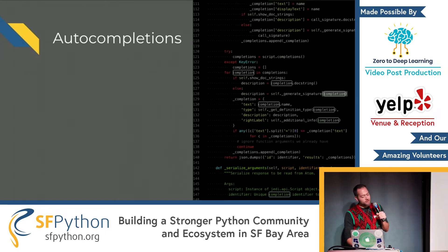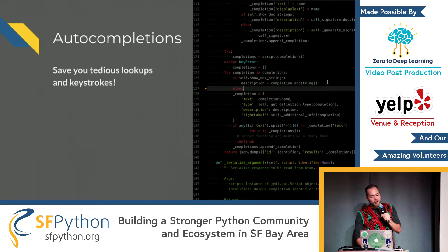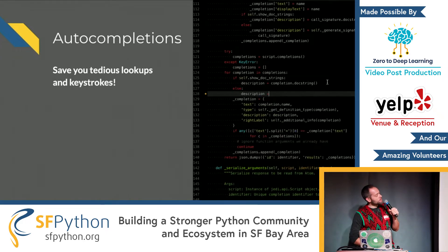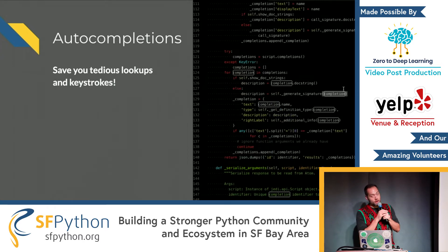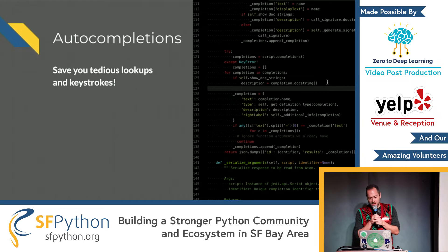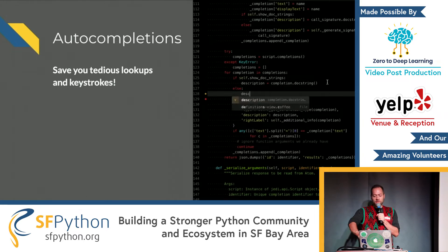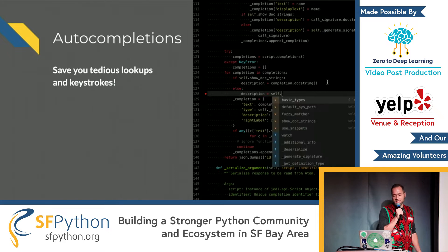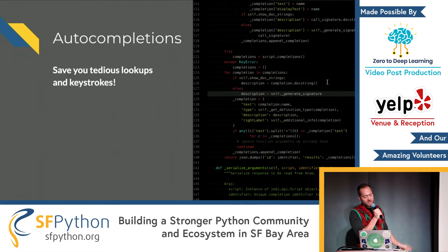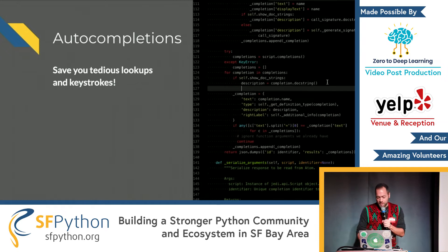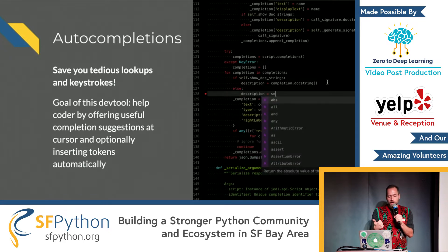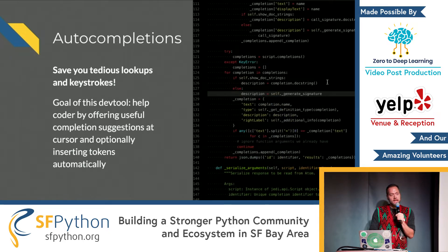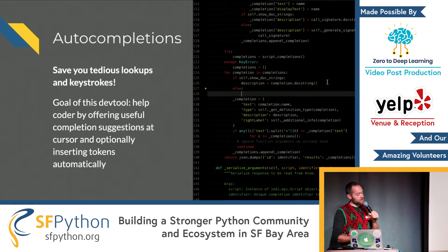Autocompletions — a quick review for anybody who doesn't know what I'm talking about. Autocompletions are a tool that helps you save on tedious lookups and keystrokes. What's happening on the right is just an example pulled from the Atom autocomplete Python package. You can see when modules pop up as somebody's typing, you get examples for what to type next and they just automatically get filled in. The goal is to help the coder by offering useful completion suggestions at the cursor as you're typing, and then optionally giving the ability to insert tokens automatically.